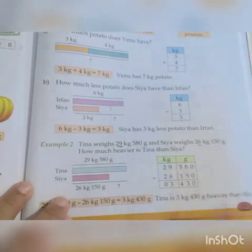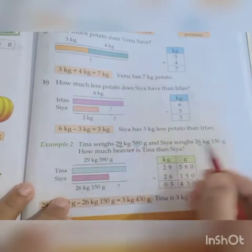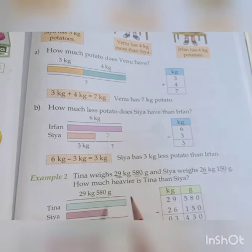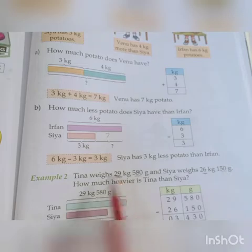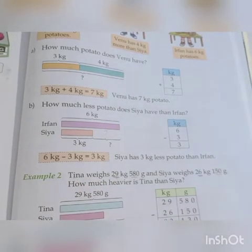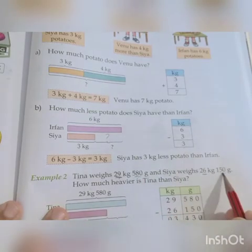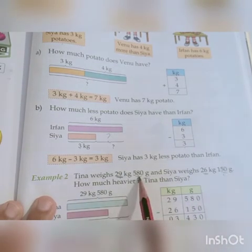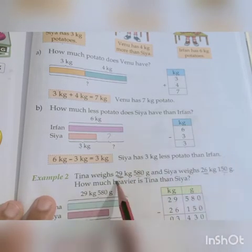If we look at grams alone - 580 gram versus 150 gram - we might think this one is more, but no, we must compare kg first to know who is heavier. Tina's kg is 29, which is more than Sia's 26, so Tina is heavier. Now how much heavier is Tina? The bigger value's bar is longer, the smaller one's bar is shorter.